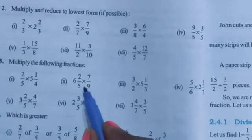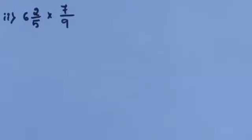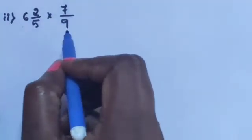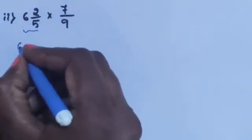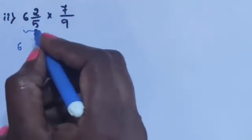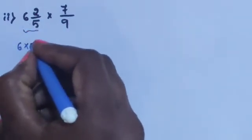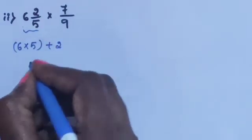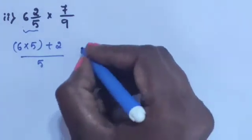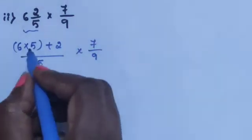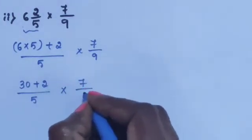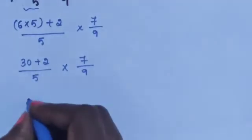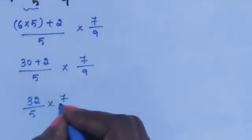Next sub-question 2: 6²/5 into 7/9. 6²/5 is a mixed fraction, convert into improper fraction. 6 is the whole number, 2 is the numerator, and 5 is the denominator. Whole number into denominator plus numerator divided by denominator: 6 × 5 = 30. 30 plus 2 divided by 5, into 7/9.